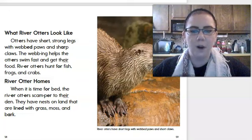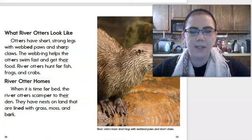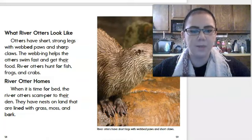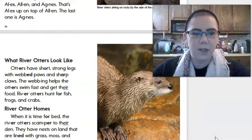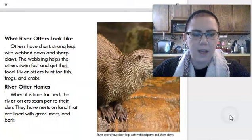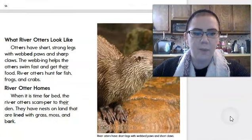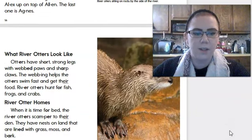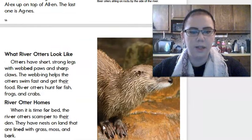River otter homes. When it is time for bed, the river otters scamper to their den. They have nests on land that are lined with grass, moss, and bark. And the caption to this picture of this river otter here says, River otters have short legs with webbed paws and short claws. So if you look, you can see their legs are very short.